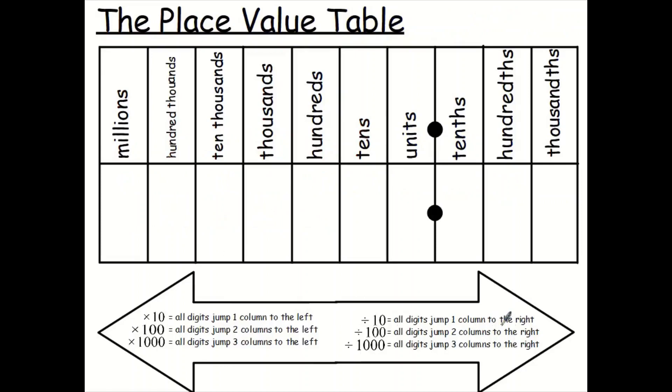Jumping to the right this time. Dividing by 10, 100, and 1,000 is jumping either one jump, two jumps, or three jumps to the right.